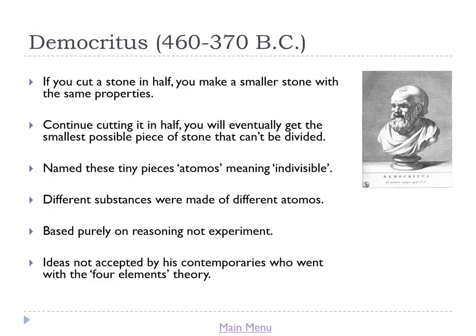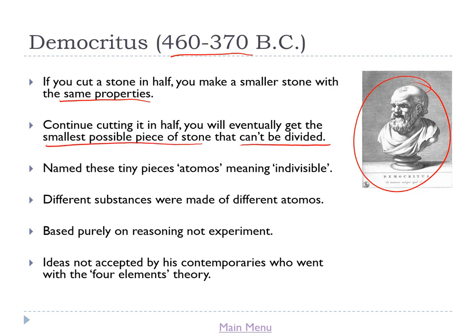We start off looking at the history of the development of the model of the atom, beginning with Democritus, an ancient Greek philosopher from 460 to 370 BC. He did a thought experiment, reasoning that if you cut a stone in half you make a smaller stone, and that smaller stone would have the same properties as the bigger one. He said if you kept cutting it in half, eventually you'd reach the smallest possible piece which can't be divided — he named these tiny, indivisible pieces 'Atomos', because Atomos means indivisible.